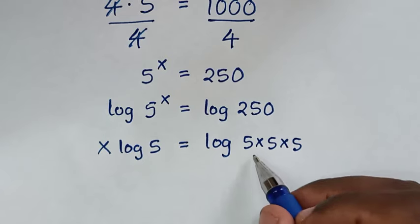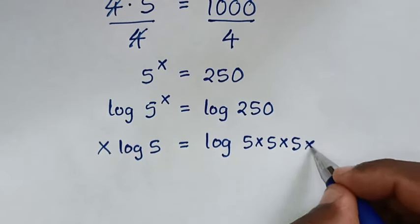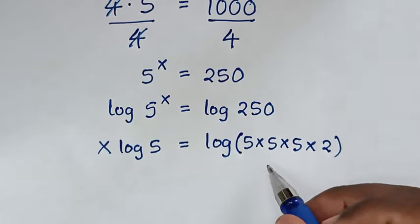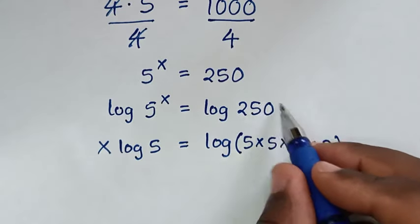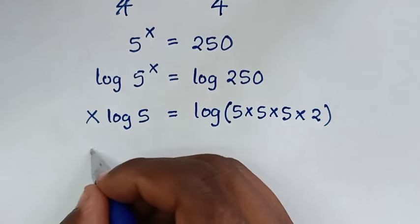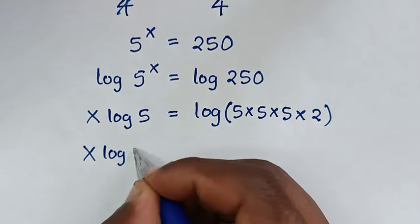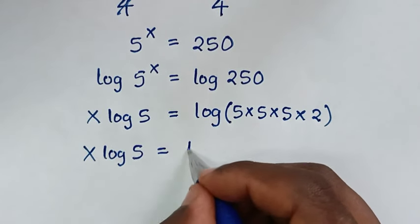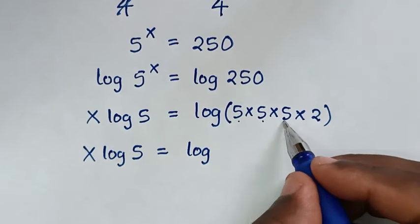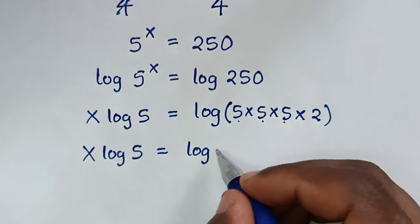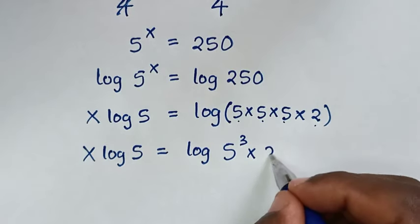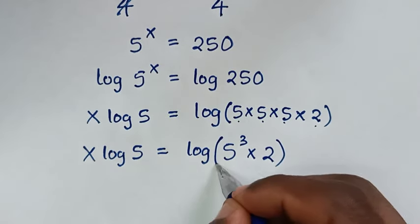Now we find the prime factorization of 250. It is 5 times 5 times 5 times 2 — that is 5 times 5 times 5 is 125, then times 2. So 250 equals 5 power of 3 times 2.